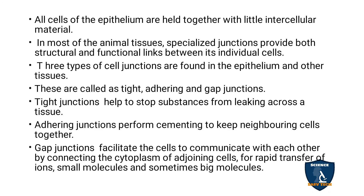All epithelial cells are held together with little intercellular material. In most animal tissues, specialized junctions provide both structural and functional links between individual cells, allowing communication between them. There are three types of cell junctions found in epithelium and other tissues: tight junctions, adhering junctions, and gap junctions.